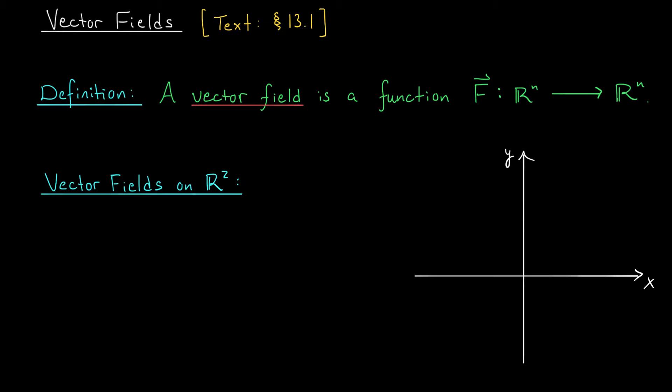You see, up until now we've been focused almost exclusively on scalar fields. These are functions that might have multiple inputs, but spit out just a single output. So for example, f of xy equals x plus y, that's a scalar field. Takes in two inputs, spits out one output.